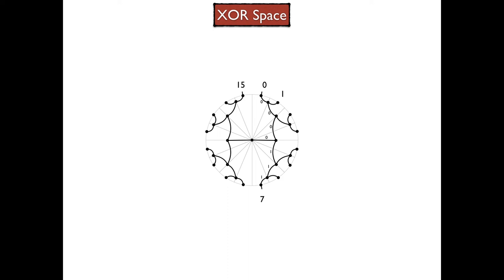That tree structure embedded in a circle now gives us an intuition of the distance between the different nodes. So we can see that 0 and 1 are closer to one another because they're part of a smaller subtree, compared to 0 and 15, which are part of completely different subtrees.